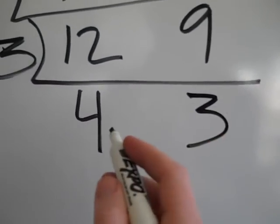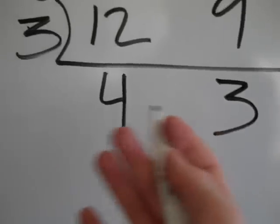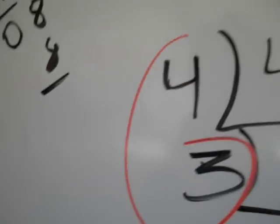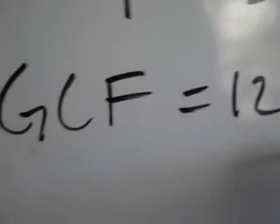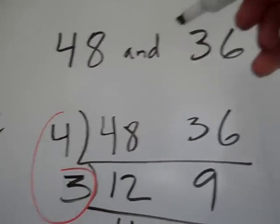Now 4 and 3 don't have any common factors. 4 is composite, but 3 is prime. There's no common factors other than 1. So, I've pulled out 4 and 3. Now I'm going to multiply those together to get the GCF. 4 times 3 is 12.